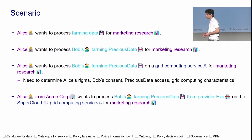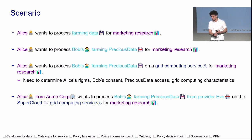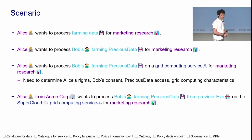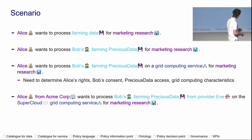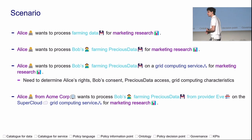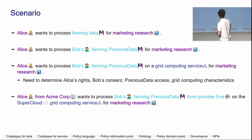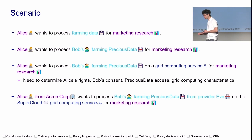At the bottom of the slides I've put checkboxes for things that need to be done. We need a catalog for data, a catalog for services, and a policy language. We get information from Policy Information Points — PIP — some of you may be familiar with the XACML specification. We need an ontology for describing grid computing services, a policy decision point for negotiation, and finally, governance.